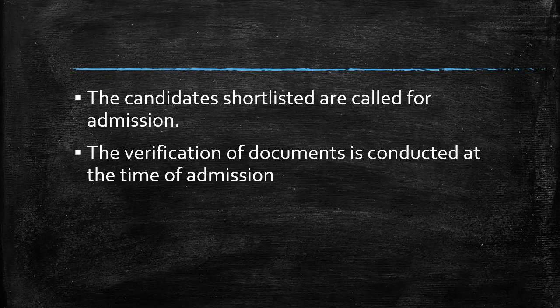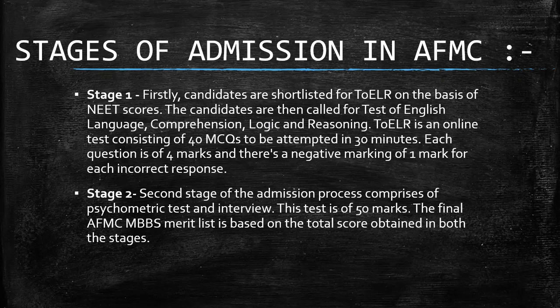Those shortlisted from NEET are called for interview, TOE LR, and verification of documents. The admission process is carried out in two stages. Stage one involves the shortlisted candidates being called for TOE LR — the Test for English Language and Comprehension, Logic and Reasoning. This is an online test carried out at AFMC itself, consisting of 40 MCQs to be attempted in 30 minutes, with 4 marks per question and negative marking for incorrect responses.